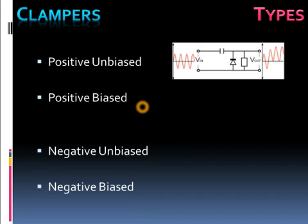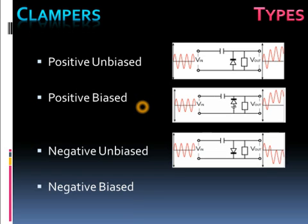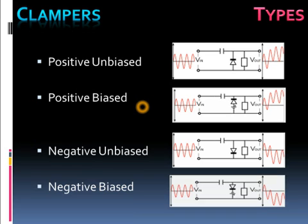Negative unbiased in which the positive peak is held at 0.7 volts, and negative biased in which we can see the positive peak is held at the required bias level.